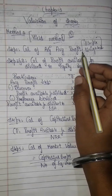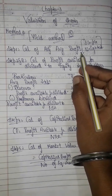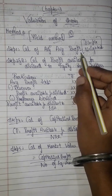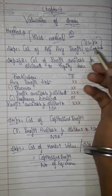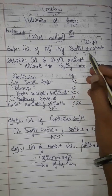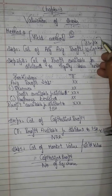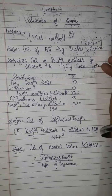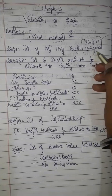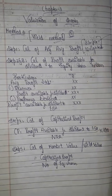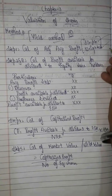Step 1 is calculation of adjusted average profit. If the profit fluctuates, we use the simple average method. If the profit increases or decreases consistently, we use the weighted average method.